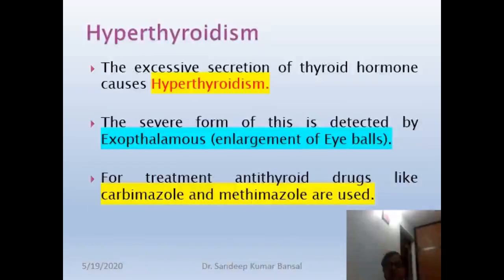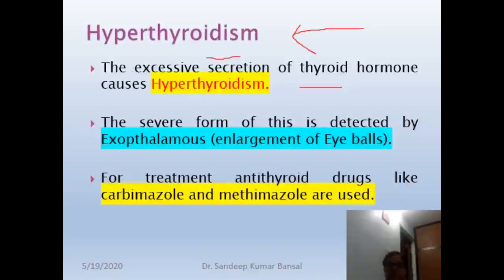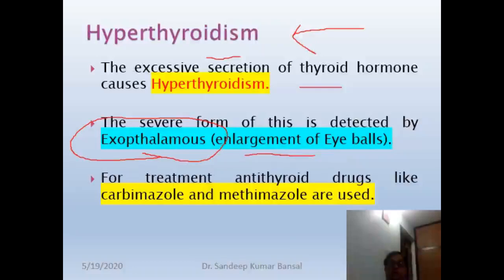The excess activity of the thyroid gland is called hyperthyroidism. In this, thyroid hormone is secreted in excess amount, and hyperthyroidism is detected by exophthalmos, in which the eyeballs get enlarged. For the treatment of hyperthyroidism, antithyroid drugs like carbimazole and methimazole are used.